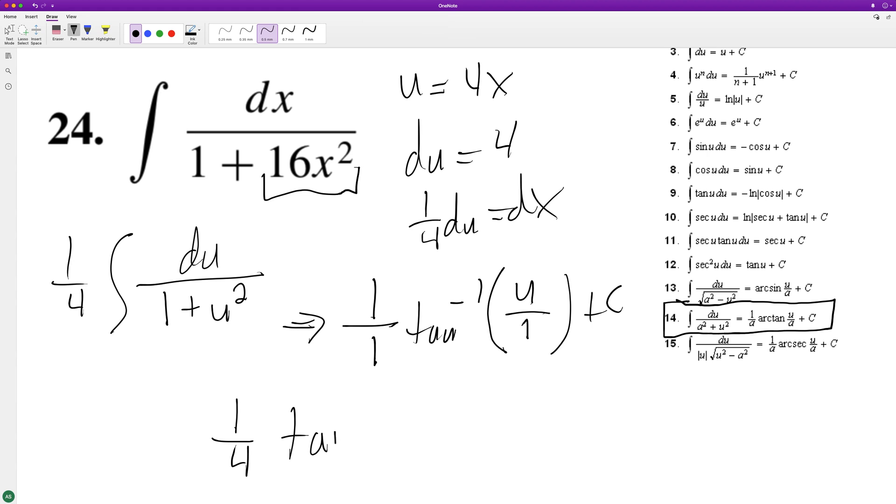So 1/4 arctangent—inverse tangent, I think they're the same—of 4x, because that's what we used for u, plus C. And that's it.